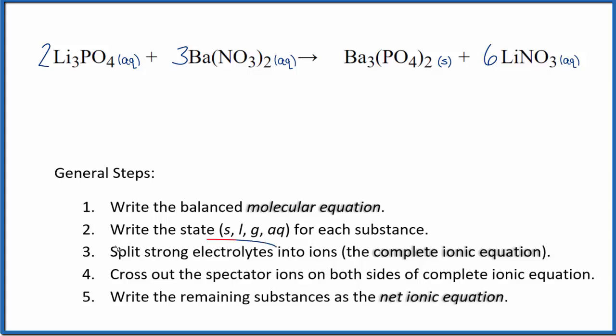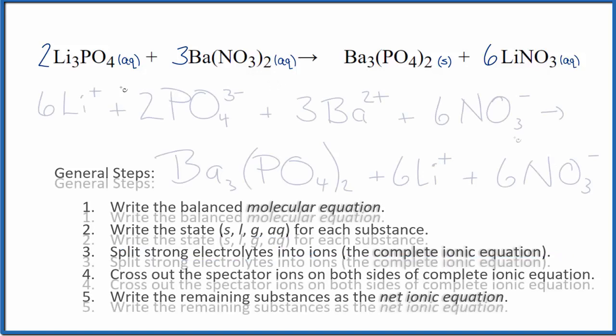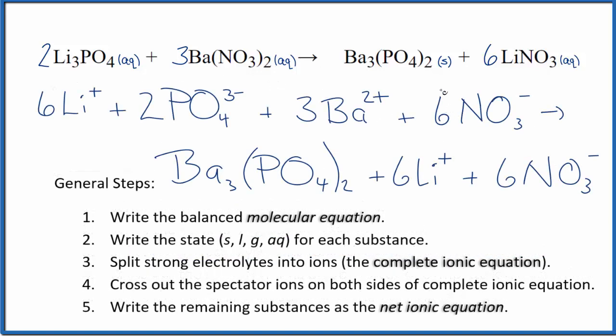Now we're going to split the strong electrolytes into ions for the complete ionic equation, and that looks like this. So this is the complete ionic equation, and note we don't split solids apart when we do these net ionic equations. So we left the barium phosphate together.